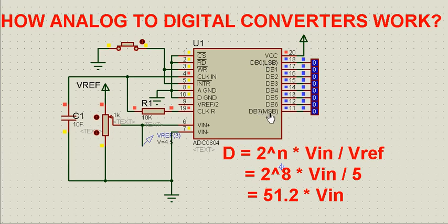DB7 is the MSB and DB0 is the LSB. So while reading the binary output code, we start from bottom to top.